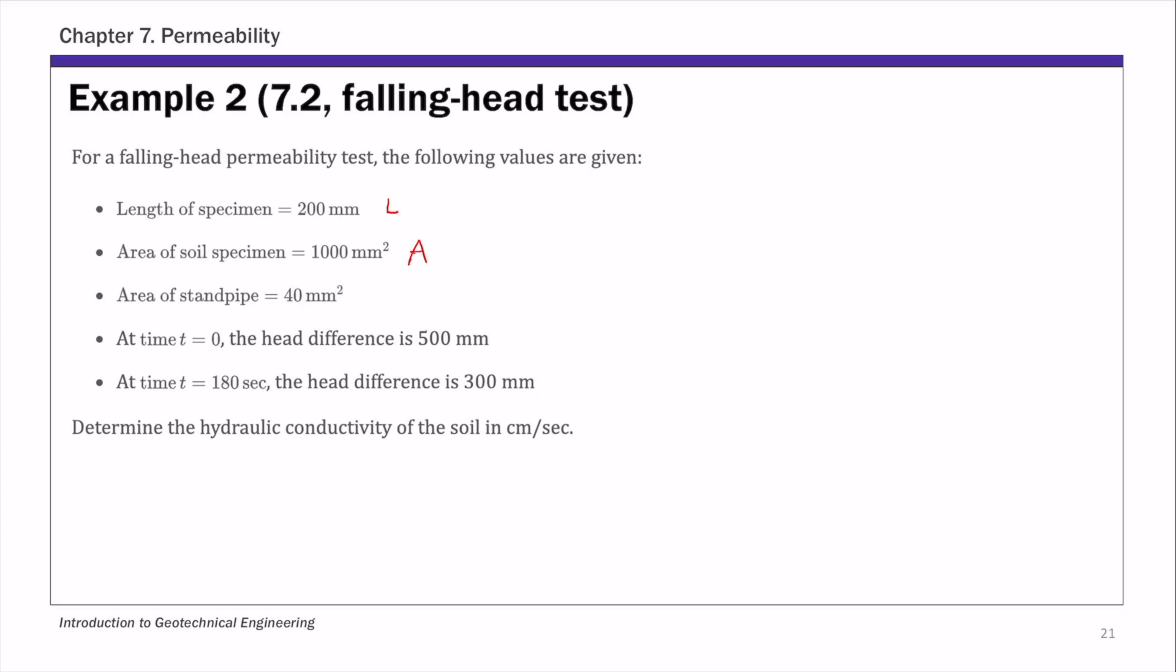And then the area of the standpipe, we use small letter a. Now also we know the head difference at two different time stations. So at initial time t equals 0, that's H1, and then H2.